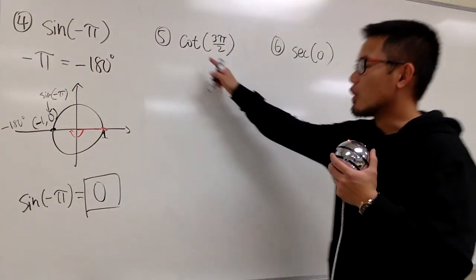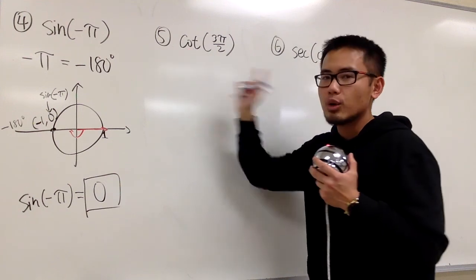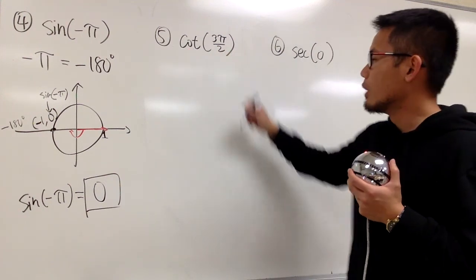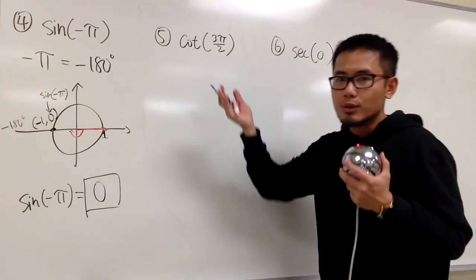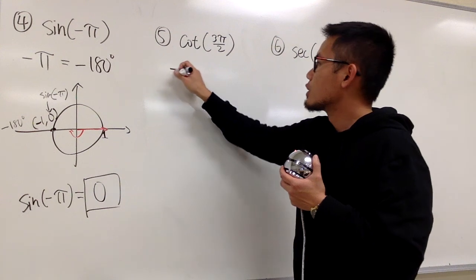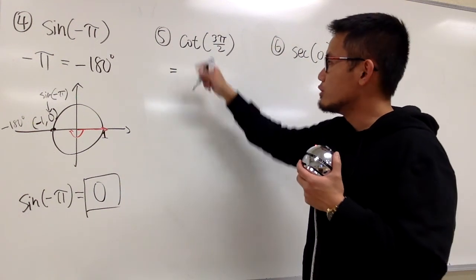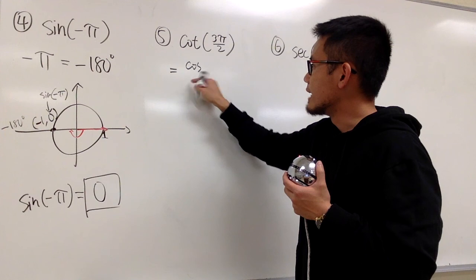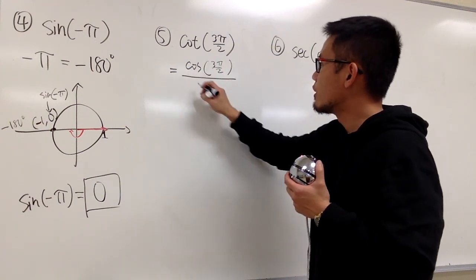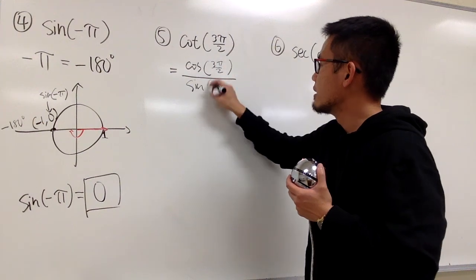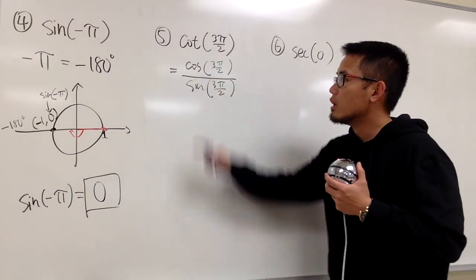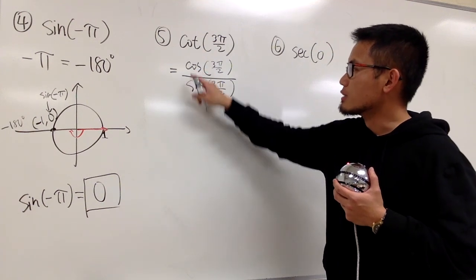Let's look at the next one. We have cotangent of 3 pi over 2. Well, first of all, perhaps we can practice some identity business. Right here, cotangent of something - cotangent is the same as cosine of this, 3 pi over 2, over sine of that. So we have to remember this identity really well. Cotangent is the same as cosine over sine.